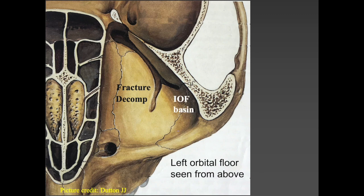The inferior orbital fissure basin — the space between the anterior end of the inferior orbital fissure and the orbital rim — is sometimes utilized for drilling extra bone to achieve decompression in severe cases.